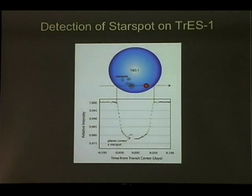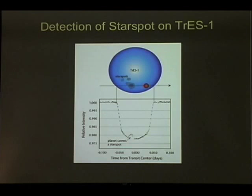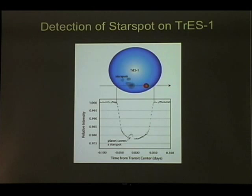In this particular case, for the star TRES 1, we see the dimming because the planet went in front of the star. But look at the bottom of this little eclipse — suddenly there is a bump. That happened because the planet went in front of a star spot, just like a sunspot. So with these observations, we actually discovered star spots on another star.